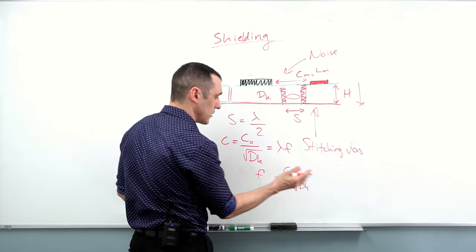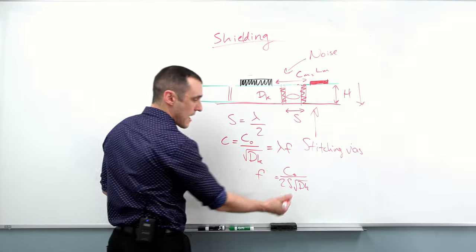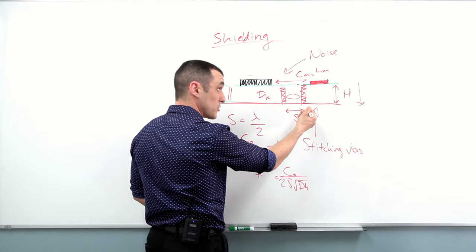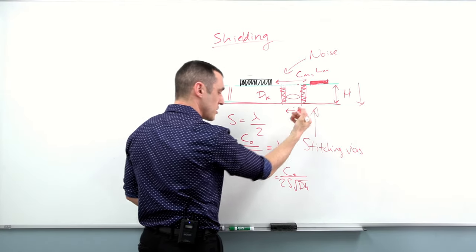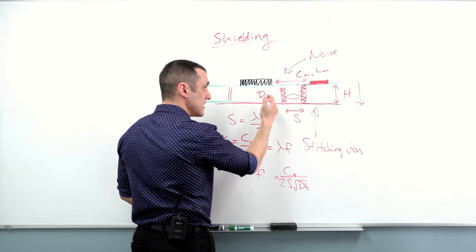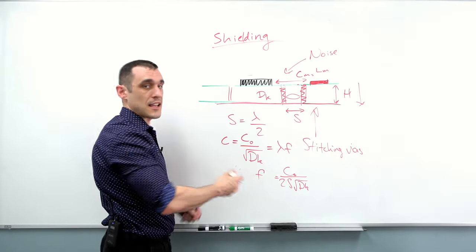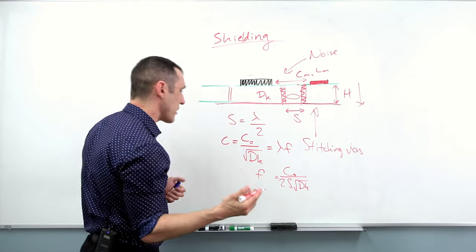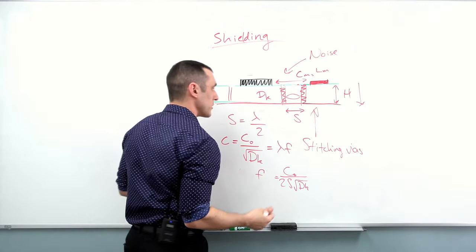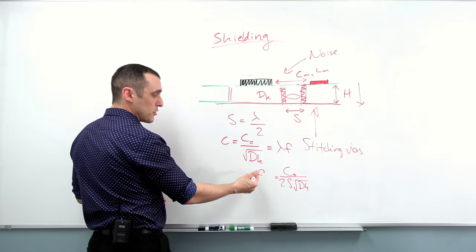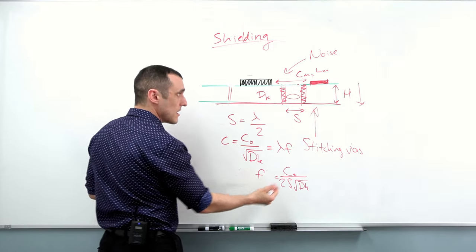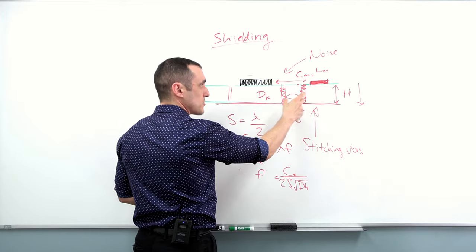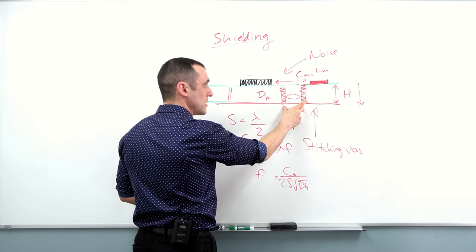Solving for f gives: f equals c_0 divided by 2s times the square root of Dk. You can look this up in any textbook. S is something you chose when you set up your stitching vias, and Dk is just the dielectric constant for your substrate material. This tells you the frequency that is going to build up a strong resonance between these two vias.